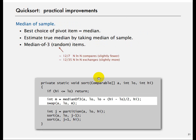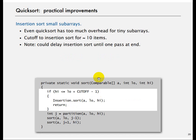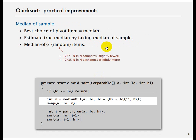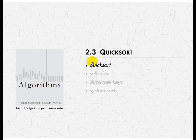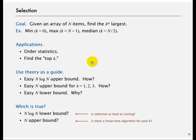There are some practical improvements. One is using insertion sort for small sub-arrays. The second is how to pick a good pivot — you can pick three random elements and use the median of three. That is something worth exploring.